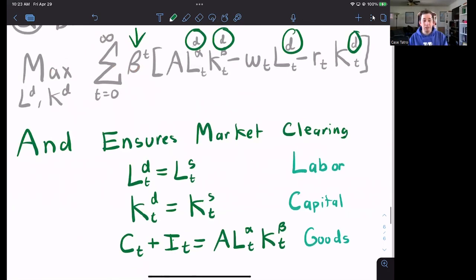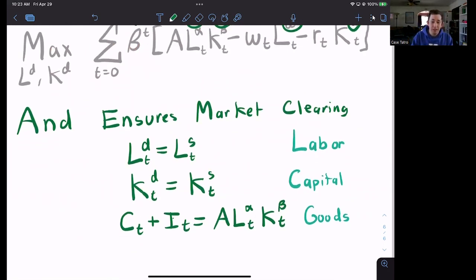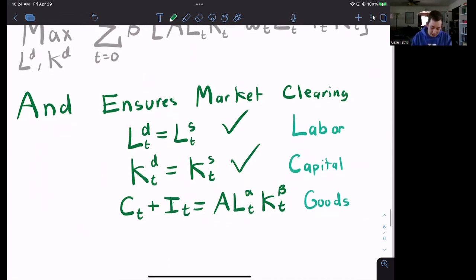Now we also need to ensure market clearing in this economy, just like we've seen in previous models. We need to make sure that labor demand equals labor supplied, that capital demanded equals capital supplied, and whatever Bill chooses to eat or invest, that needs to be exactly equal to the number of coconuts we produce today. This is the goods market clearing condition.